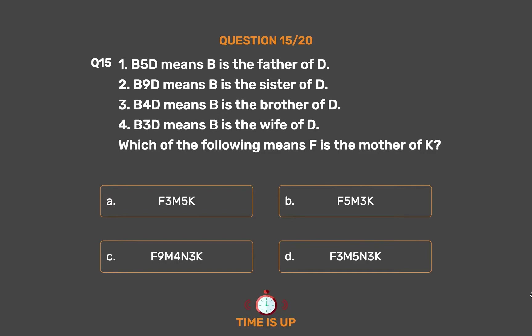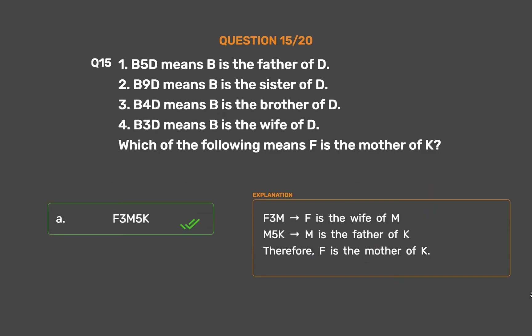The correct answer is Option A: F3-M5-K. F3M means F is the wife of M. M5K means M is the father of K. Therefore, F is the mother of K.